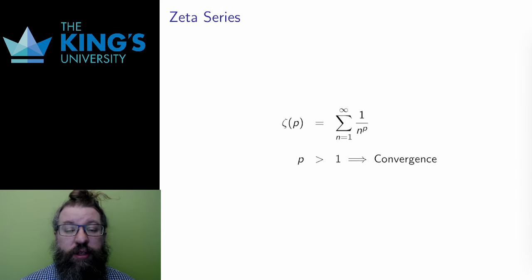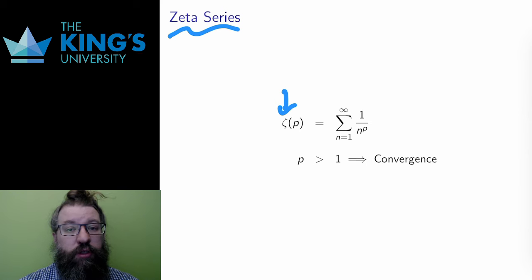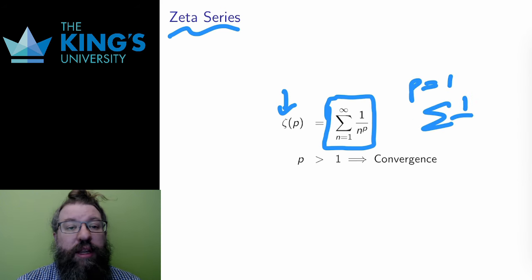There's one more key example I want to introduce, and I'm going to call these the zeta series and use the Greek letter zeta to write them. Notation varies for these series, but they are related to a famous function in mathematics called the zeta function, and I like to take notation from that relation and call them zeta series. The zeta series for some number p, any real number again, is the sum that has terms one over n to the p. This is like the harmonic series. You get the harmonic series exactly for p equals one, but it allows for other exponents in the denominator.